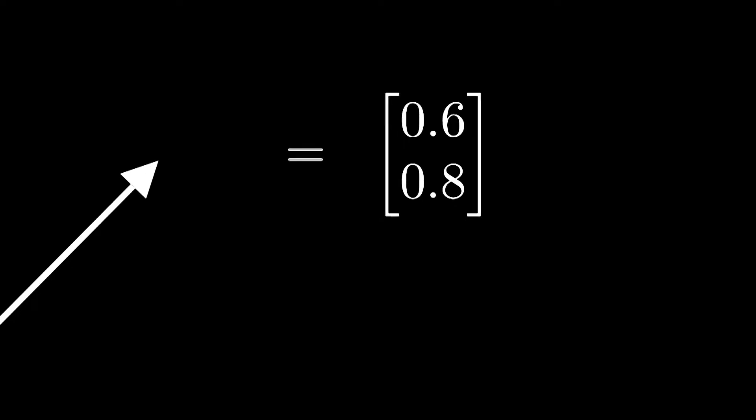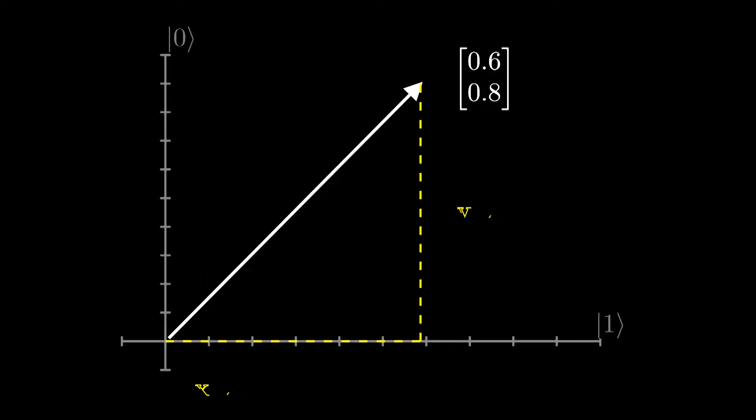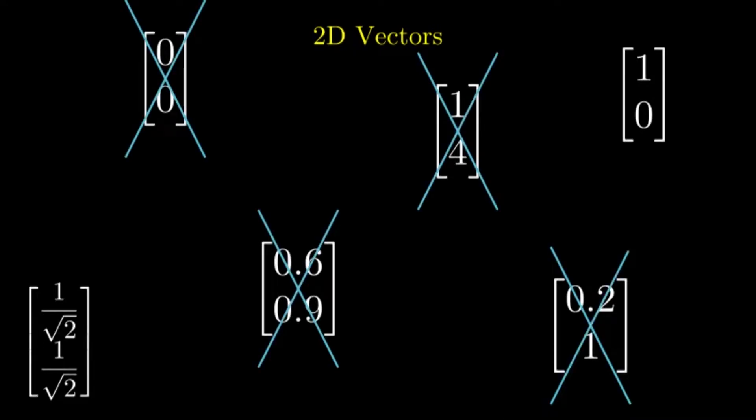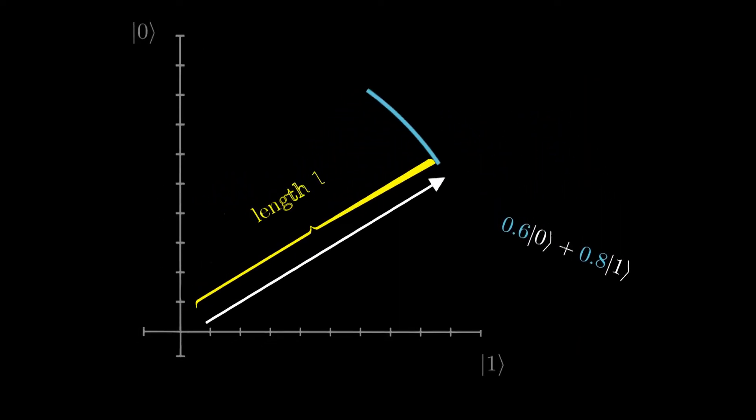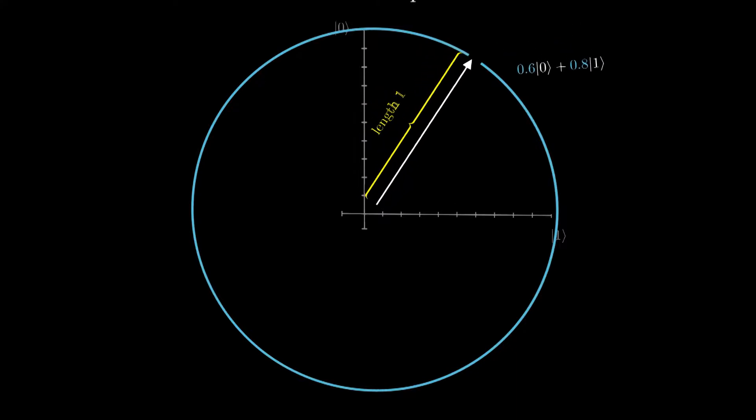If we plot it on a coordinate plane, it's just like plotting any other vector. However, quantum states can't be any vector. They're constrained to vectors where the sum of the squares of its amplitudes is 1, which makes only vectors along this unit circle possible.